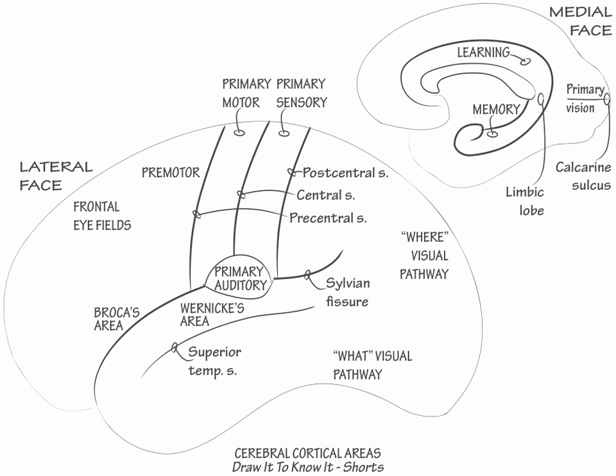Now we will label the three prefrontal cortical regions and learn their functions. Show that motivation stems from the anterosuperior limbic lobe, the anterior cingulate gyrus, and what is referred to as the anterior cingulate or medial frontal cortex. Injury here results in a lack of attention and motivation, abulia.